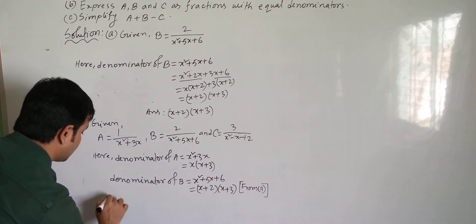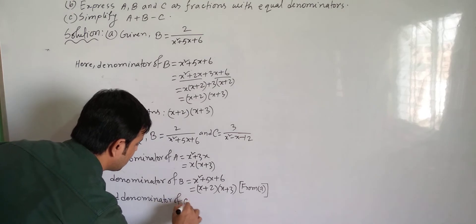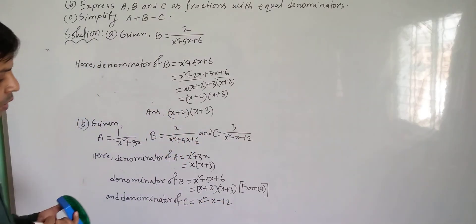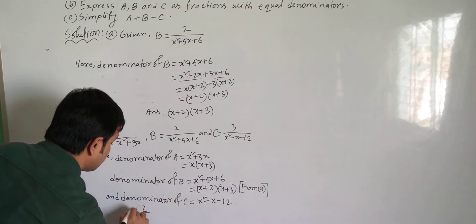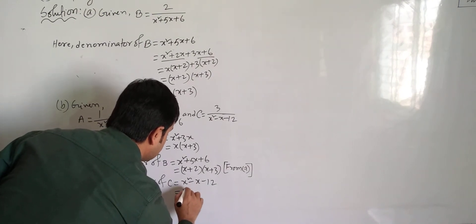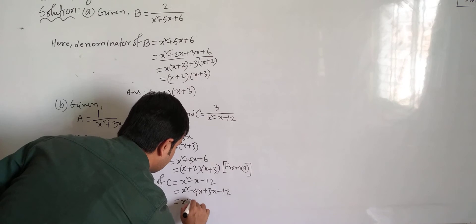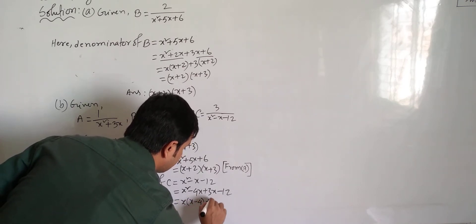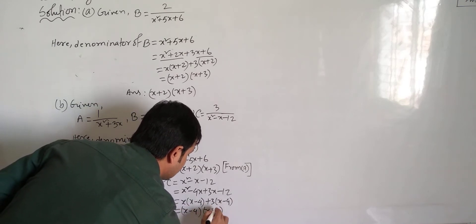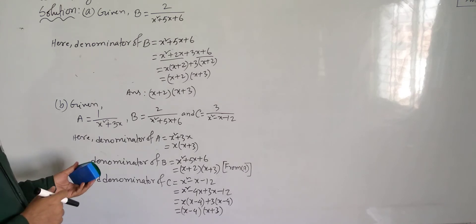Now the denominator of c is x² - x - 12. This is also a middle term factorization. We factorize 12: take 4 and 3, their difference is 1. So we write x² - 4x + 3x - 12 = x(x - 4) + 3(x - 4) = (x - 4)(x + 3). So we have done the factorization of the denominators of a, b, and c.